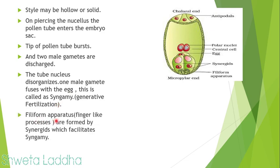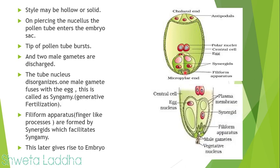The filiform apparatus — finger-like processes formed in the synergids — literally guide the process of fertilization and facilitate syngamy. As seen in the picture, the pollen tube reaches the embryo sac and the filiform apparatus guides the male gametes to carry out syngamy. This first fertilization, syngamy, results in the formation of the embryo.